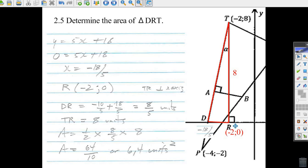This part here, TR, looks pretty easy because this is perpendicular, so it goes straight up. Right below it, this R must be minus two and zero. So this whole length here goes from zero to eight, so the height of this triangle is eight. That's pretty easy, but we've got to figure out what D is.